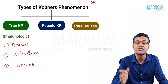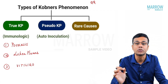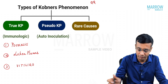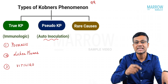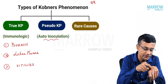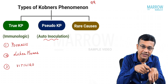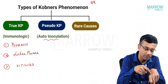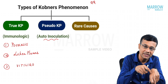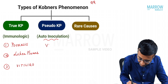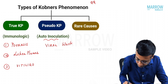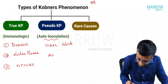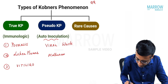Pseudo Koebner's phenomenon happens due to auto-inoculation — a viral infection is scratched and inoculated along the line of trauma in the form of a line. Two important viral diseases showing pseudo Koebner's are viral warts and molluscum contagiosum.